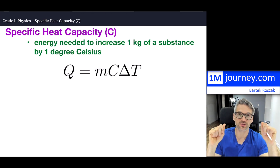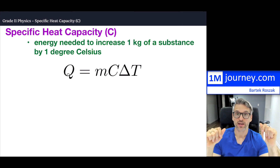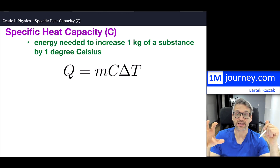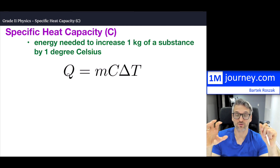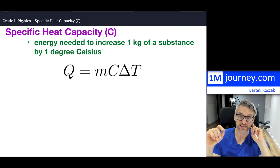What type of substance are you talking about? If you take a particular substance — water, aluminum, iron, or any other — we can do a test to see how much energy would be needed to increase one kilogram of that substance by one degree Celsius. That is referred to as the specific heat capacity.